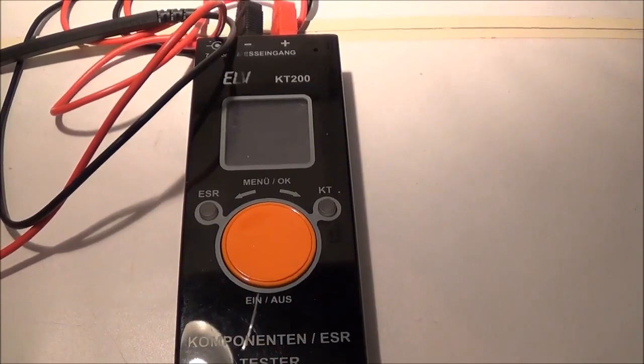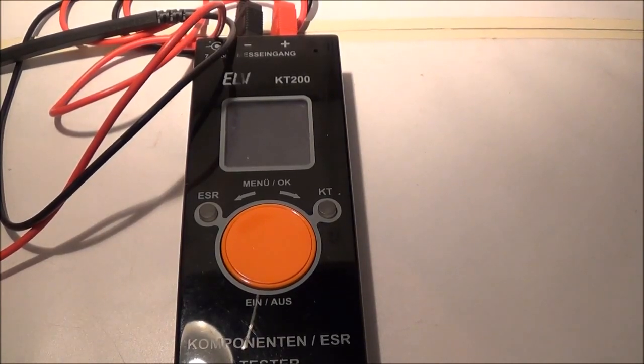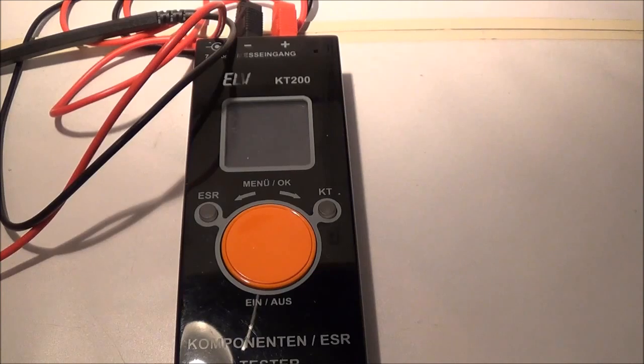Today I'm going to demonstrate my ELV KT200 combination curve tracer and ESR meter. It came as a kit and is made in Germany. It cost me approximately $85.